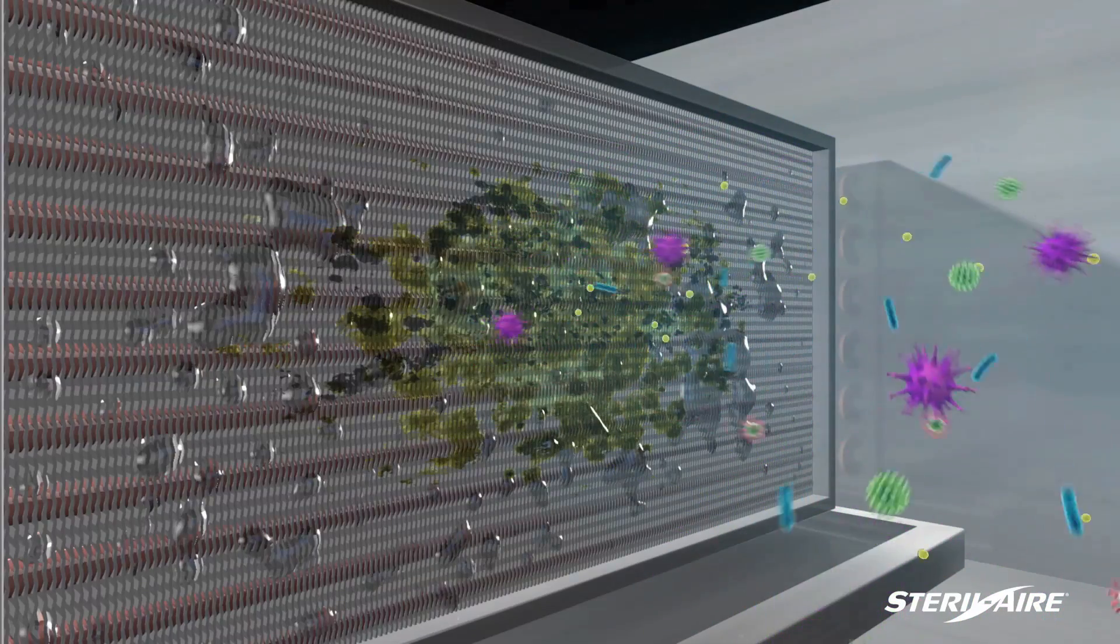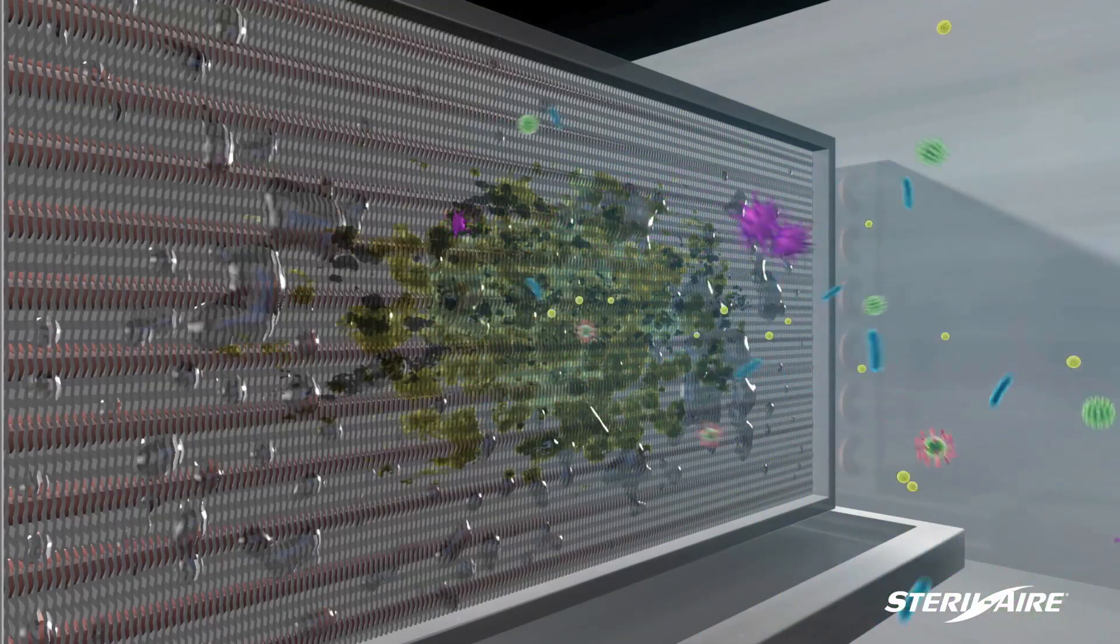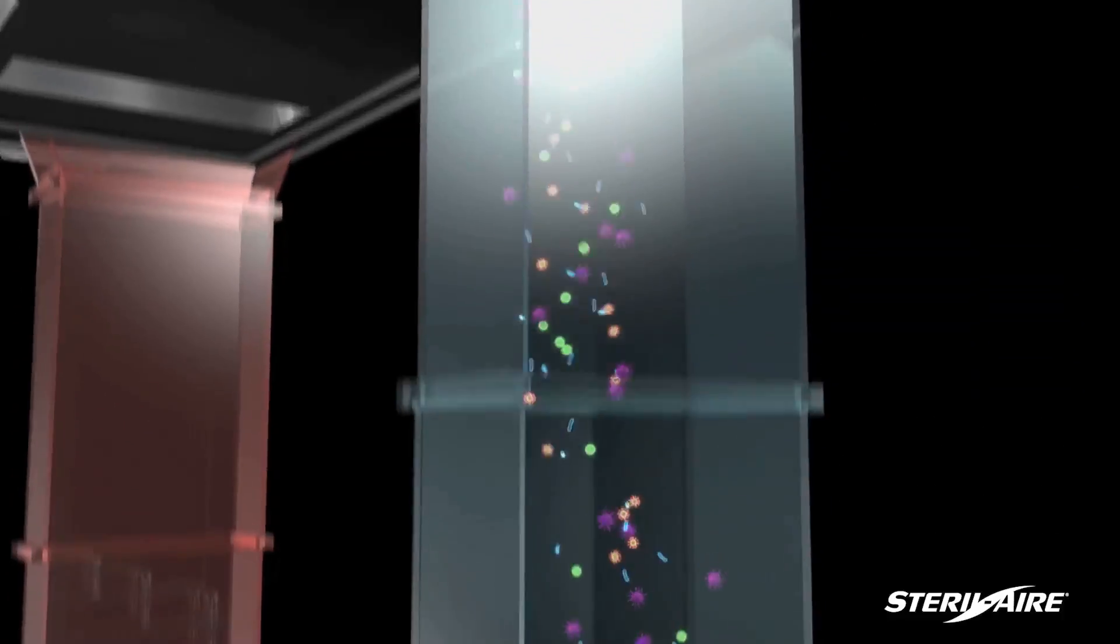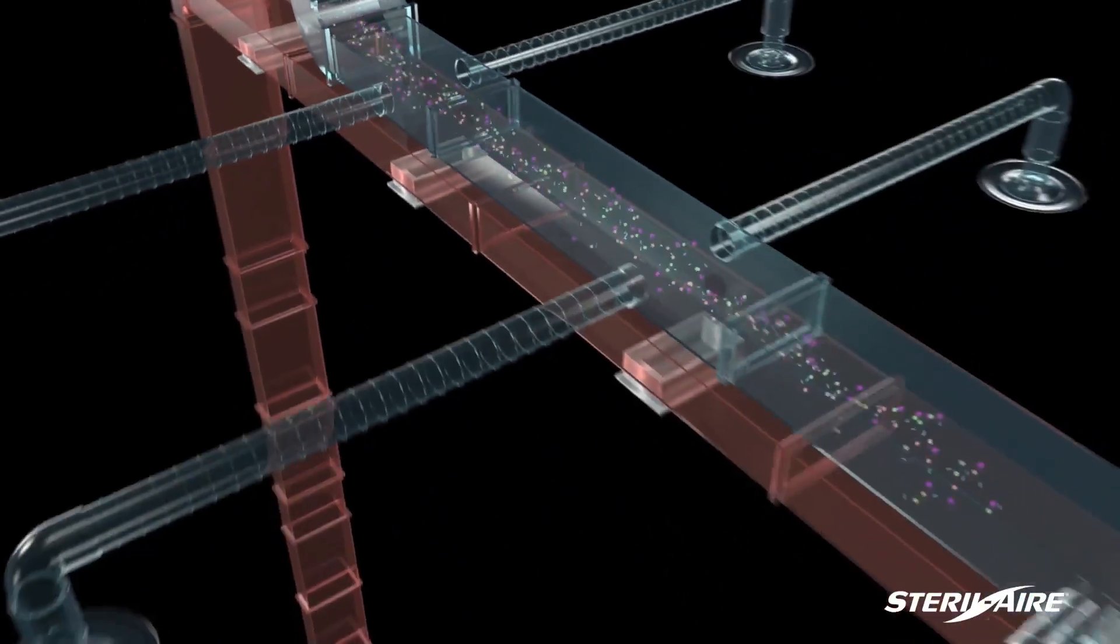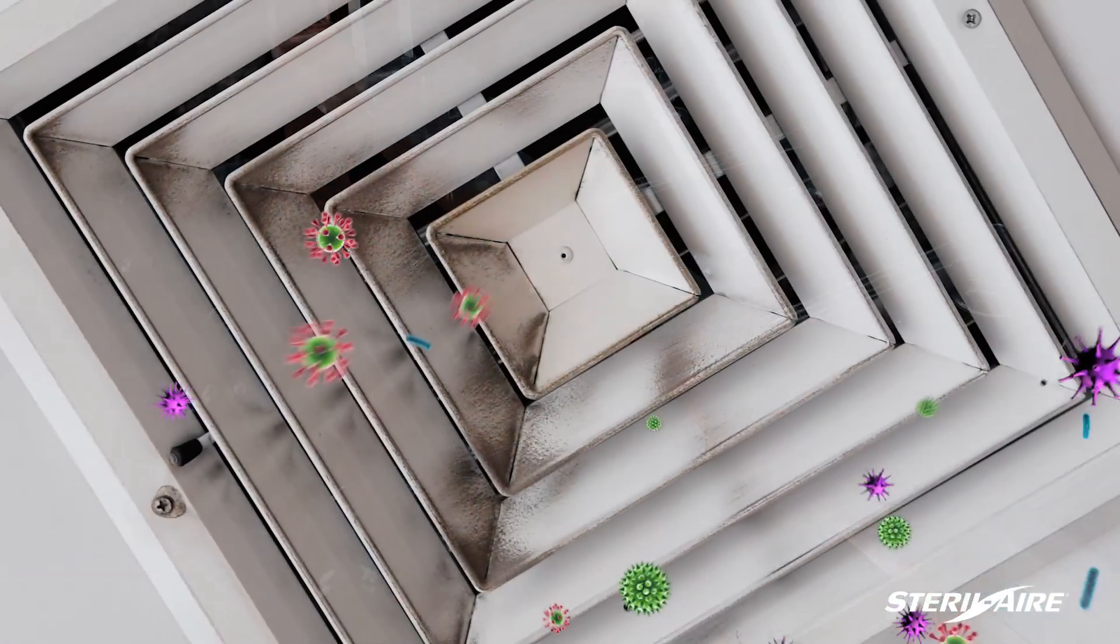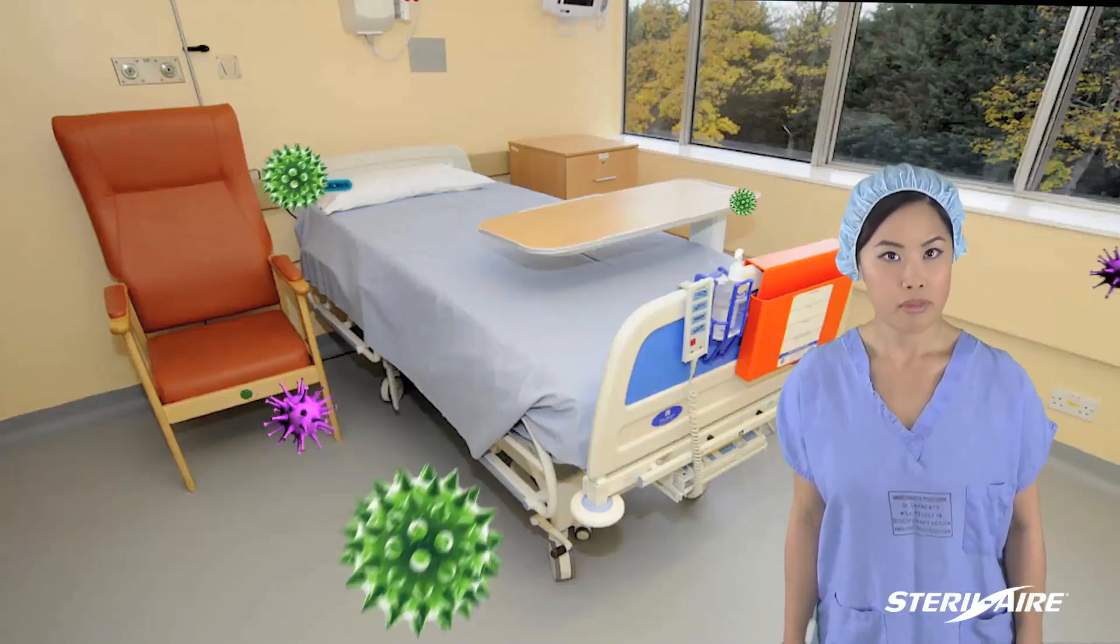This allows the dirt that passes through the filters to stick to the coil fins, forming a complex biofilm that produces and releases infectious microorganisms, such as MRSA, Pseudomonas, and Aspergillus. These are also distributed throughout the building.